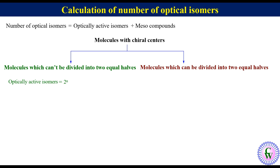The number of meso compounds is equal to zero. So the total number of optical isomers will be equal to 2 raised to the power n plus zero, which is equal to 2 raised to the power n.